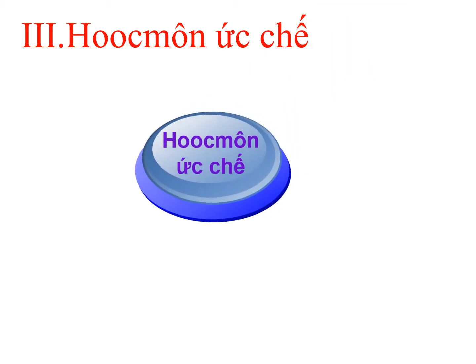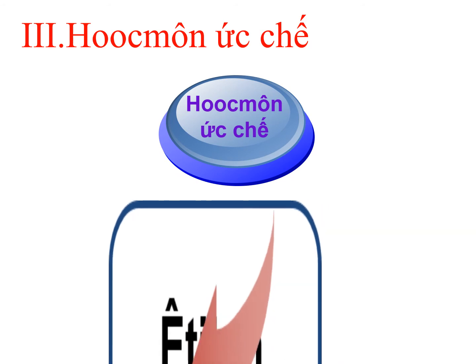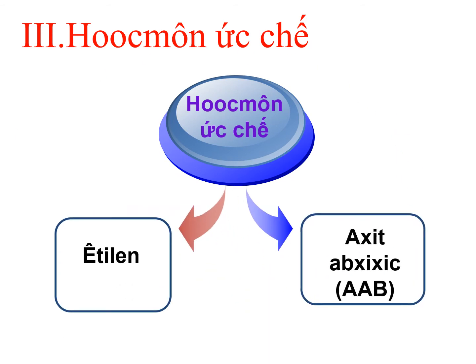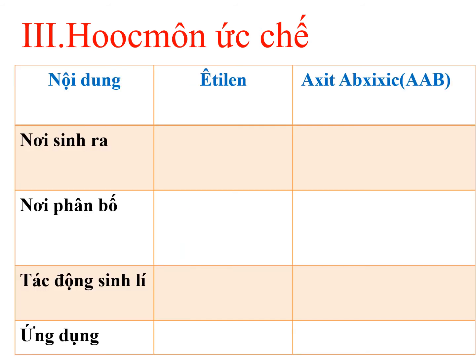Cô và các em cùng tìm hiểu phần 3 - hốc môn ức chế. Về mặt phân loại, hốc môn ức chế sẽ có 2 loại: thứ nhất là ethylene và thứ 2 là acid abscisic, ký hiệu là ABA. Đối với từng loại hốc môn này, các em cần lưu ý: nơi sinh ra, nơi phân bố, tác động sinh lý và ứng dụng của hốc môn trong đời sống.